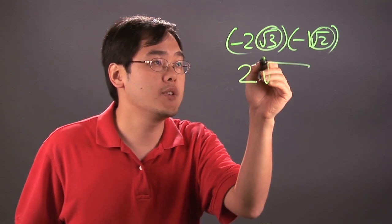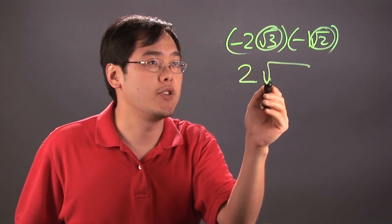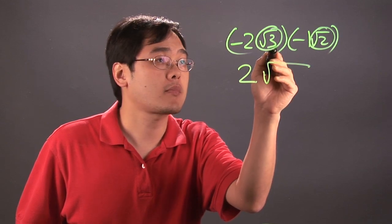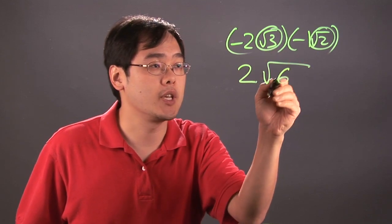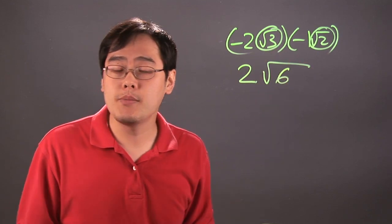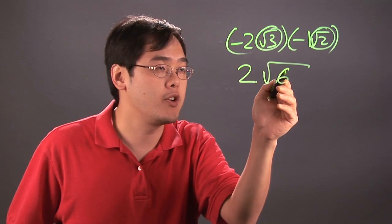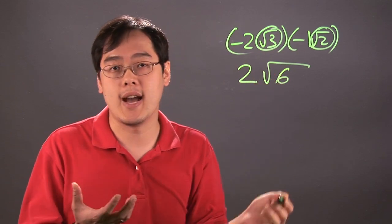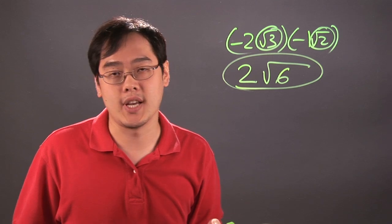Now all you have to do is, since you know they're both underneath the radical, you write the square root symbol and then you multiply 3 times 2 which is going to give you 6. Now sometimes you can simplify the number underneath, but square root of 6 is not really reducible, so you're left with 2 square root of 6.